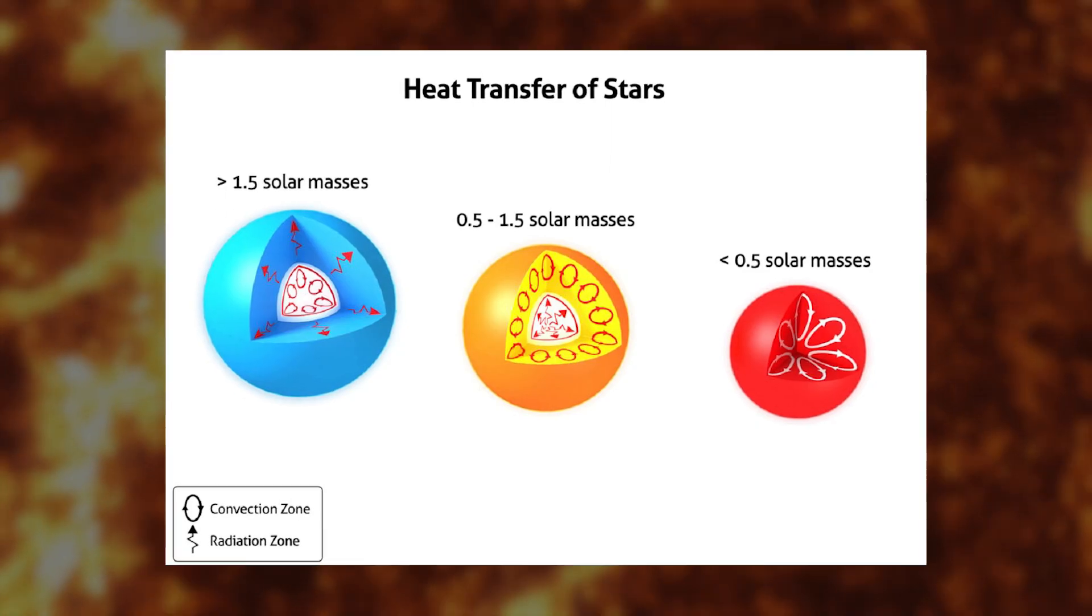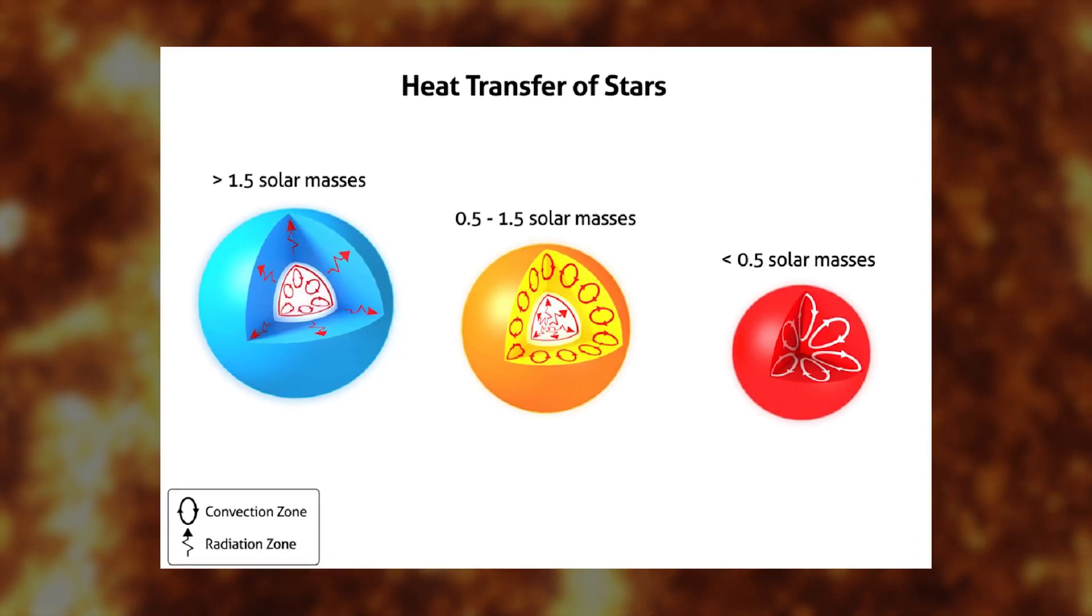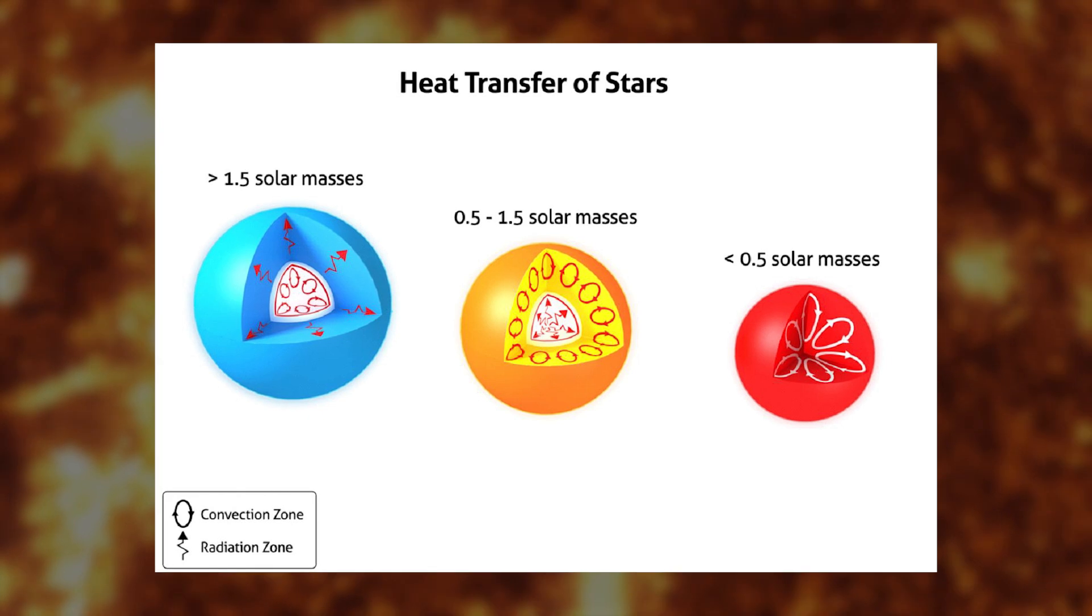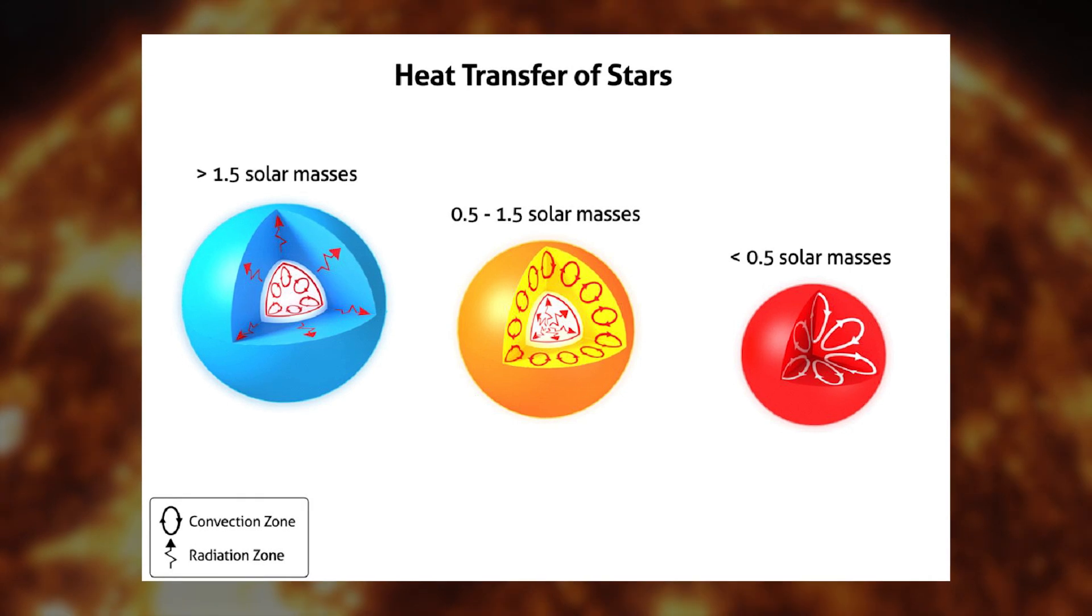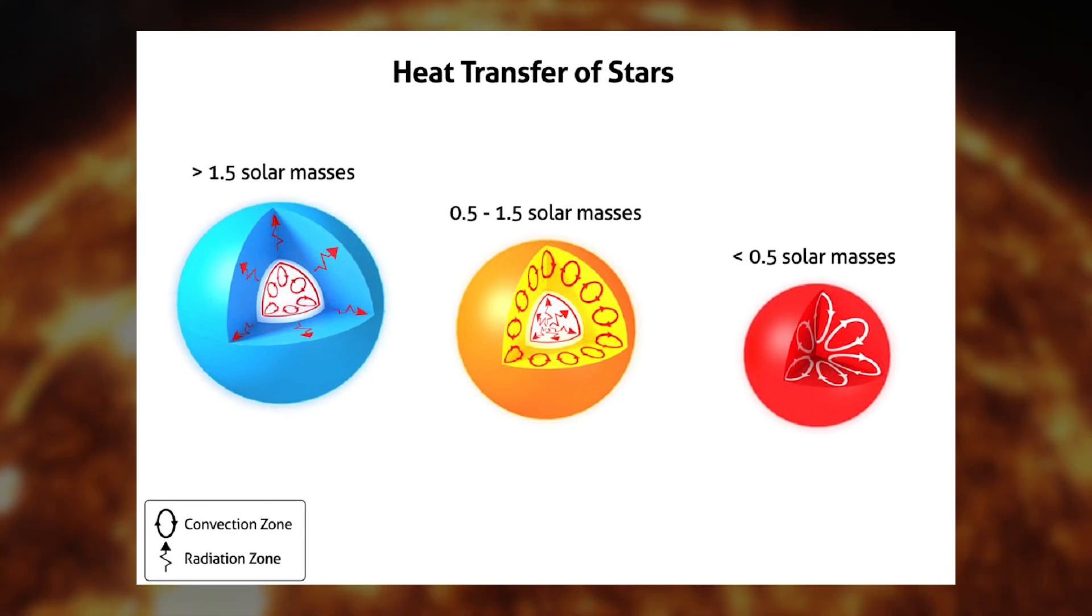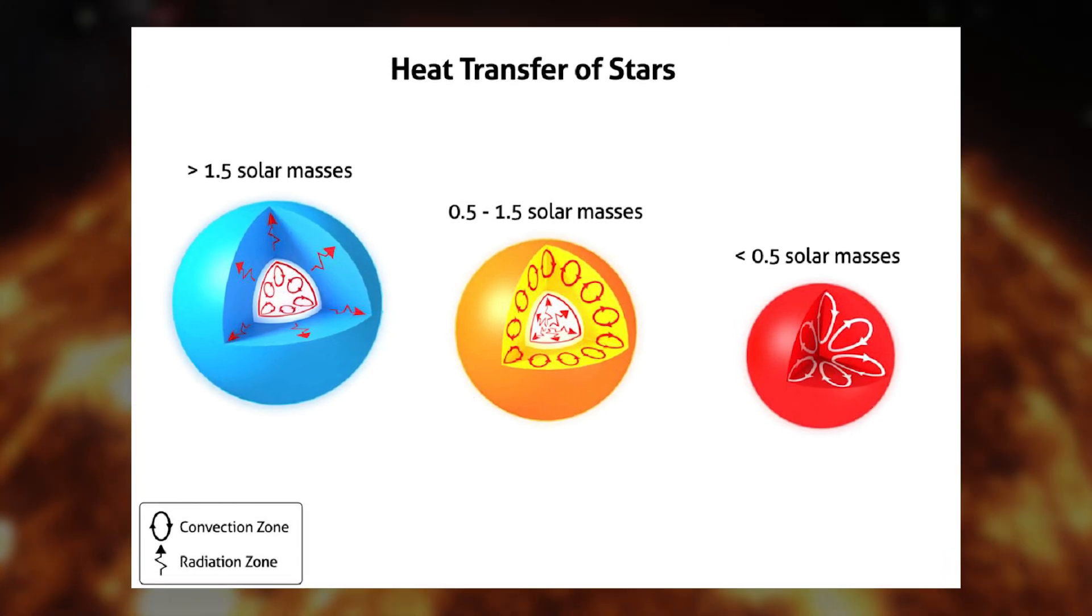Unlike their bigger cousins that accumulate all their helium in their core due to their increased gravity, red dwarfs are fully convective. That means their helium and hydrogen are constantly mixing, reducing pressure and slowing down the rate at which they burn their fuel.